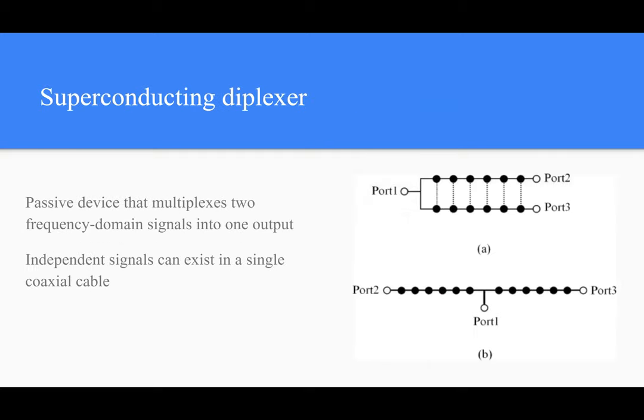Next, we have a superconducting diplexer. This device allows for two independent signals in the frequency domain to coexist in one coaxial cable. This is good because it allows us to feed power into DC devices that can only take one line of signal, but it allows for two of these independent signals to coexist together without interrupting each other.